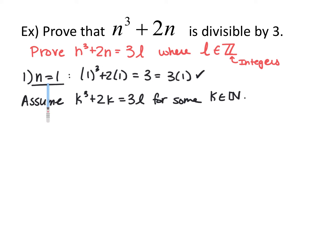First, prove it's true for n equals 1. Plugging in 1 gives 1 cubed plus 2 times 1, which is 3, which equals 3 times an integer. Now assume it's true that k cubed plus 2k equals 3l for some k in the natural numbers. Go ahead and pause the video and prove it's true for k plus 1.